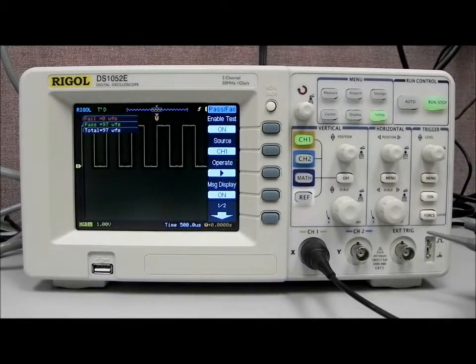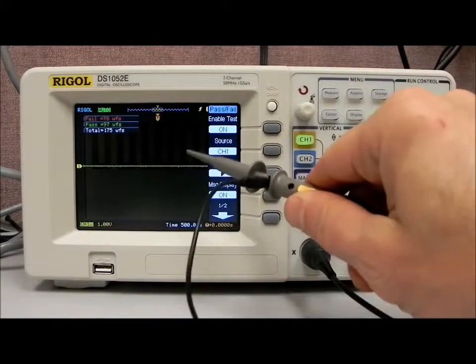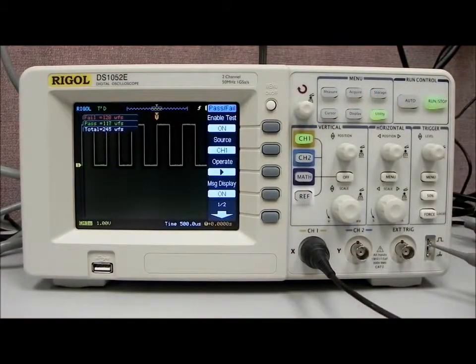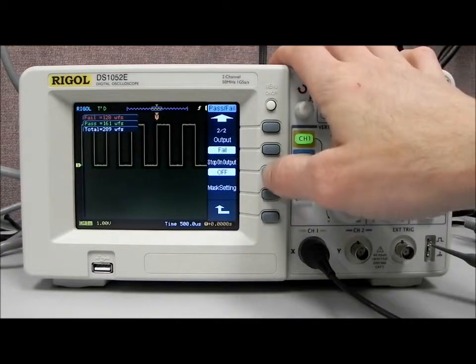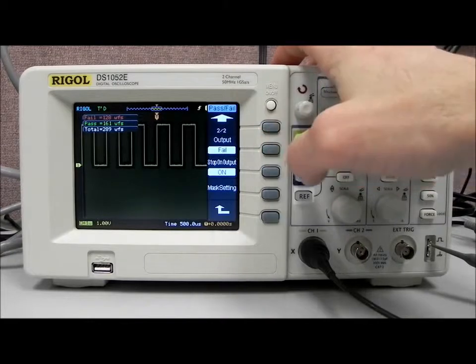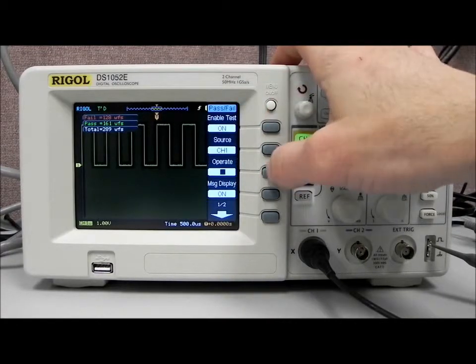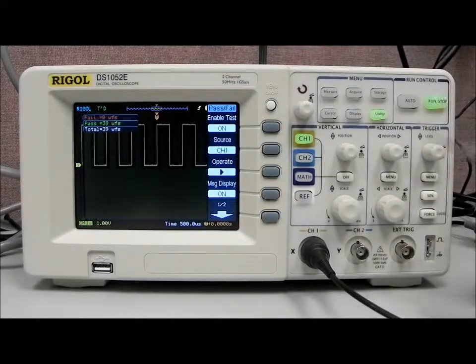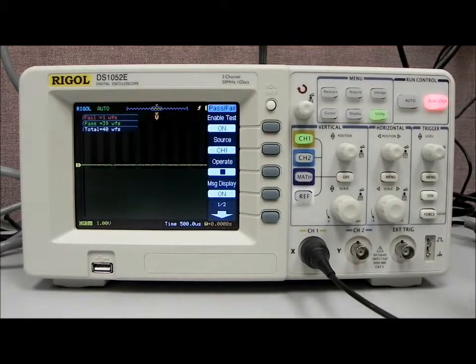And then if we go to a fail, now we have a number of lines that are outside of that original mask setting. I'm going to just turn that off for a second, and also turn the stop on output, and we're going to have the output on fail. So that means that when it fails, the box is going to stop, and you'll see it will quit taking waveforms. So we've gone into stop mode, and now we've only had one fail, but that fail has stopped the instrument from taking any more data.